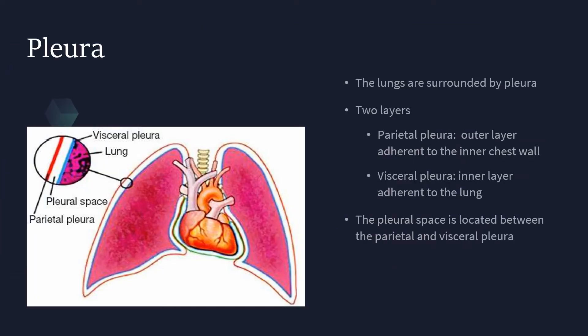The pleura is the membranous covering of the lung. The lungs are surrounded by pleura. There are two layers: the parietal pleura, which is the outer layer adherent to the inside of the chest wall, and the visceral pleura, which is the inner layer adherent to the lung. The pleural space is located between the parietal and visceral pleura. This pleural space is a potential space — it's typically non-existent.